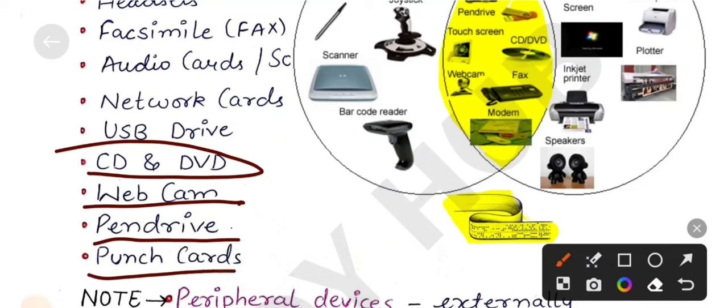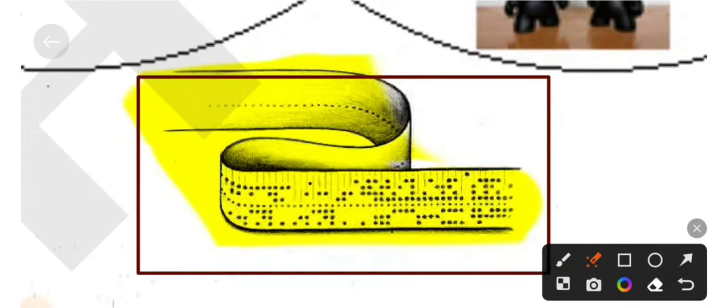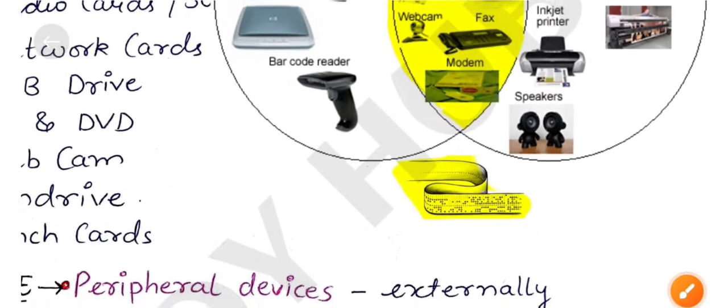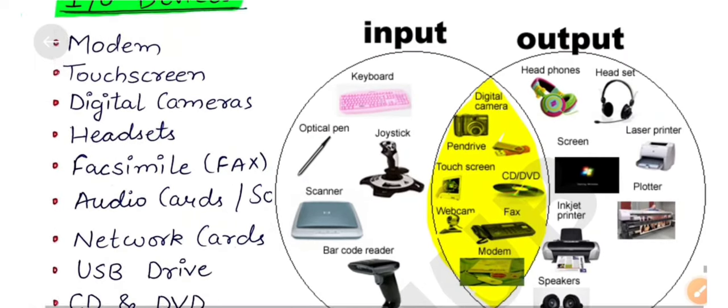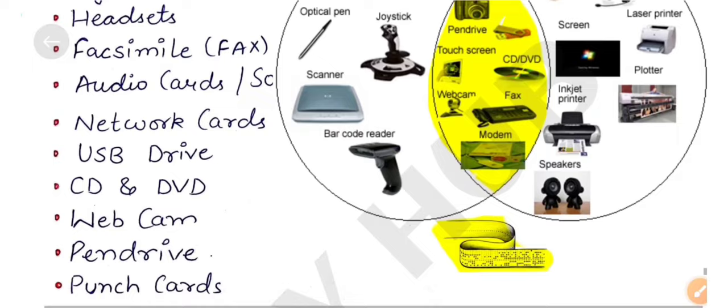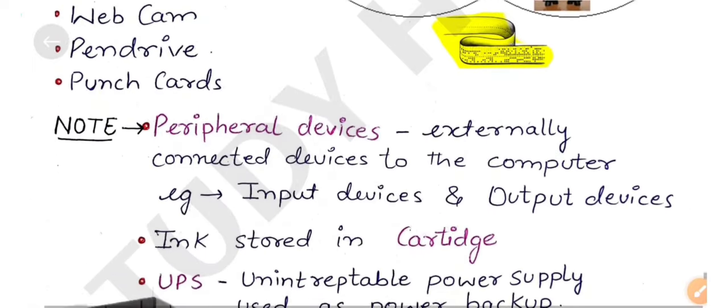Punch cards. This is a stiff paper which holds data in the form of holes. Here you will see holes here. This is the punch card, here little holes. This what does hold data in the form of holes. This performs both functions, input as well as output. After we have these I.O. devices, if you know other I.O. devices, please comment section, please tell us.